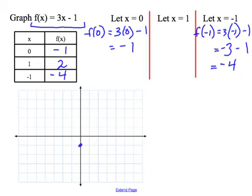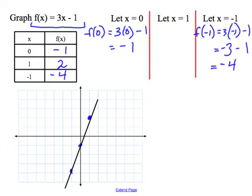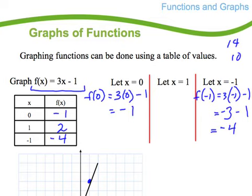So (0, -1) is right there, (1, 2) is up there. Since this is a straight line, I'm hoping the next point is along that line. (-1, -4)—1, 2, 3, 4—right there. Sure enough, I'm getting a straight line rising to the right. This is an example of a function.